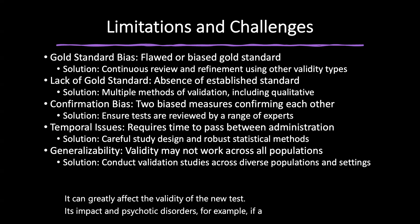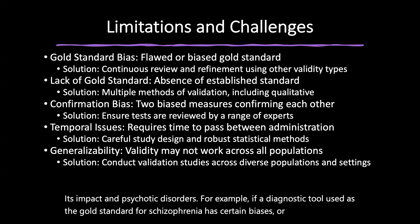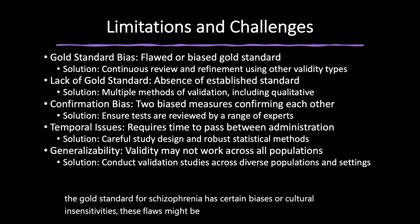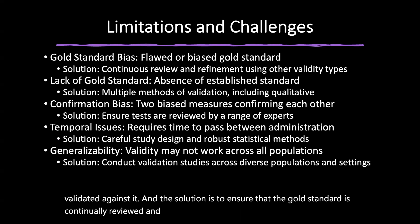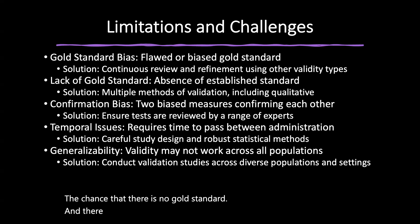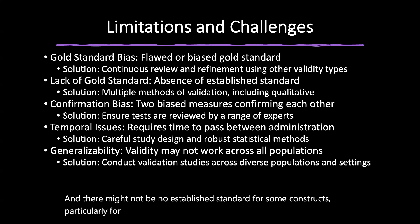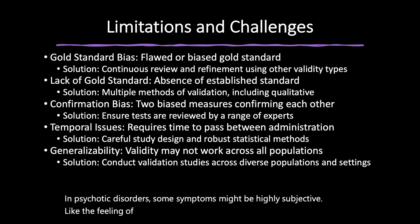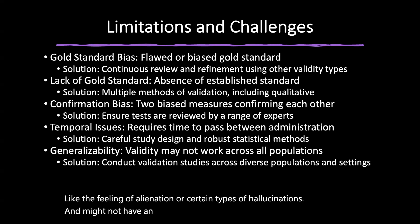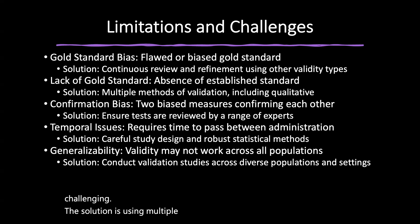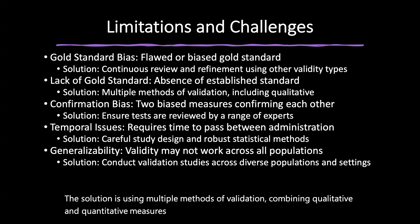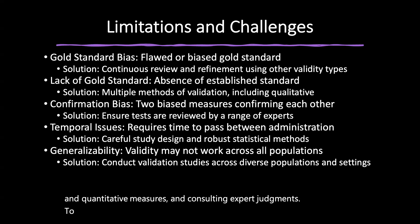Concurrent validity is a subtype of criterion validity — named concurrent because scores of the new test and the established one are obtained simultaneously. In forensic psychology, concurrent validity is crucial for developing tools that are more efficient, accurate, or specific to particular populations such as sex offenders. For example, a forensic psychologist developing a new risk assessment tool to predict recidivism among sex offenders would compare it to an existing validated assessment — the gold standard. The process involves selecting a sample of convicted sex offenders, administering both assessments simultaneously, comparing results, and interpreting the correlation.